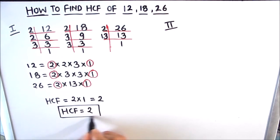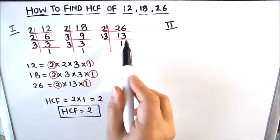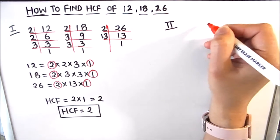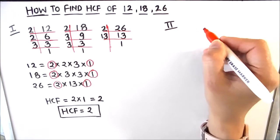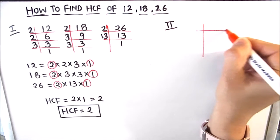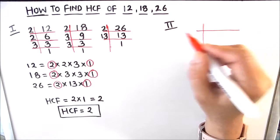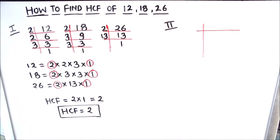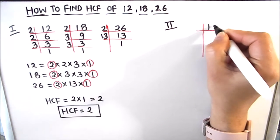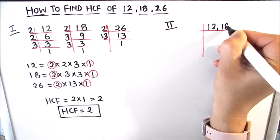That means 2 is the highest common factor which divides all three numbers fully without leaving a remainder. Now I am going to show you another method where we use a single ladder to find the factors of all three numbers together.